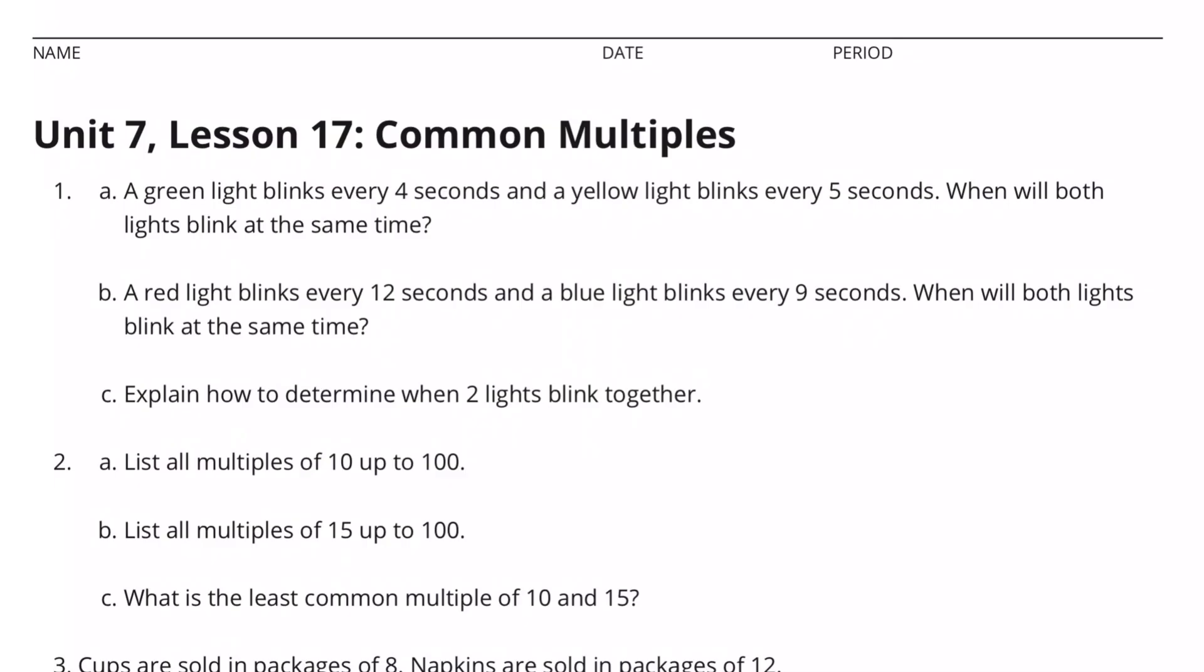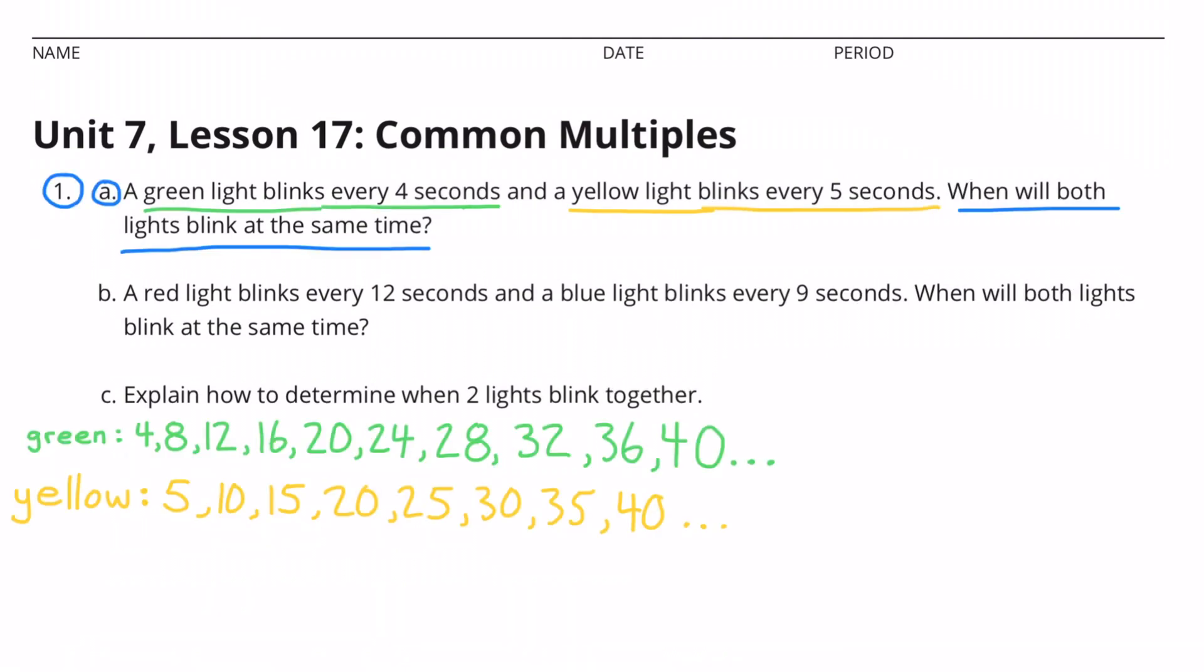Unit 7, Lesson 17, Common Multiples. Number 1a: A green light blinks every 4 seconds, and a yellow light blinks every 5 seconds. When will both lights blink at the same time?